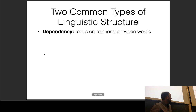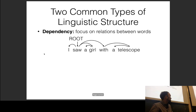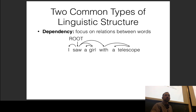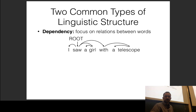With respect to syntax trees, there are two widely used varieties. One is dependency trees, which focus on the relations between words. For example, 'sought' as a verb, with 'I' on the left side connecting to 'girl' and 'with' — pointing out where the subject, object, and prepositional phrase are in the sentence. This can be used to express syntax, or semantics if you use slightly different varieties of arrows.